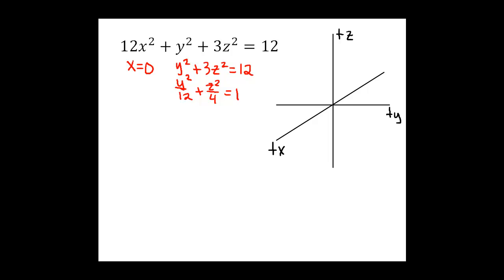And in that form, it allows us to see easily that the y-intercepts will be plus and minus square root of 12. Square root of 12 is a little past 3 and a half, so we'll put a point there, the positive and the negative part of the y-axis. And the z-intercepts will be plus and minus 2. So we'll go ahead and put some points there and sketch in our ellipse.